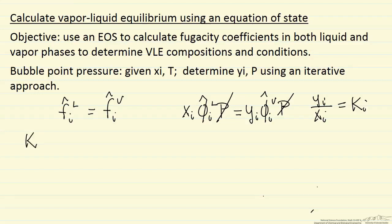The idea now, we can calculate ki from the fugacity coefficients. Ki is the fugacity coefficient in the liquid phase over the fugacity coefficient in the vapor phase, and this is for each component.